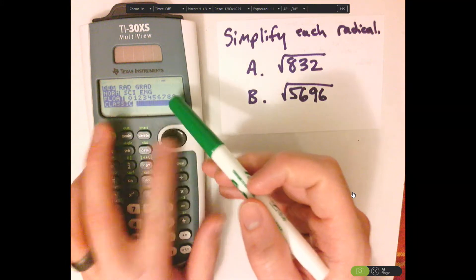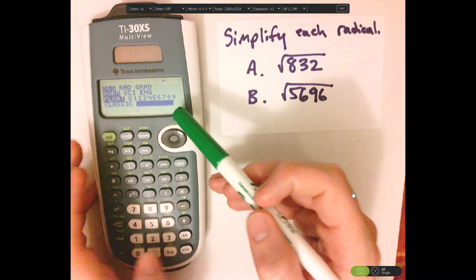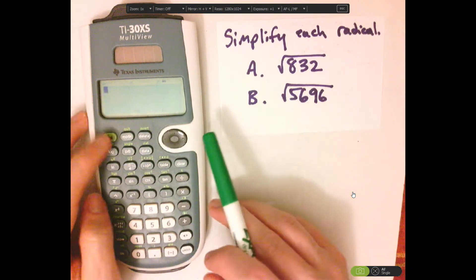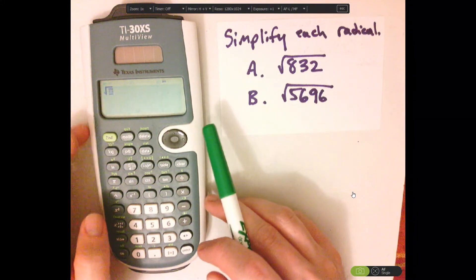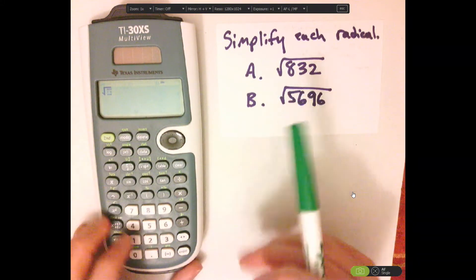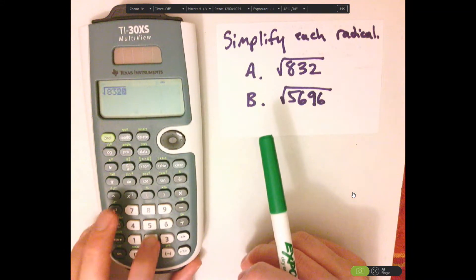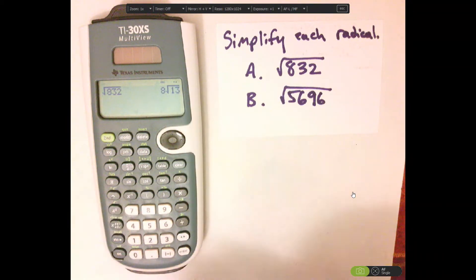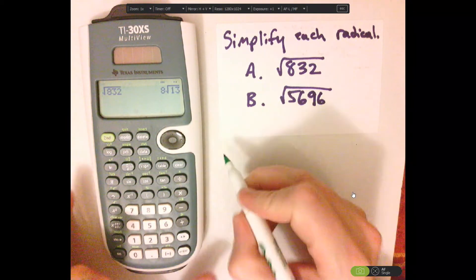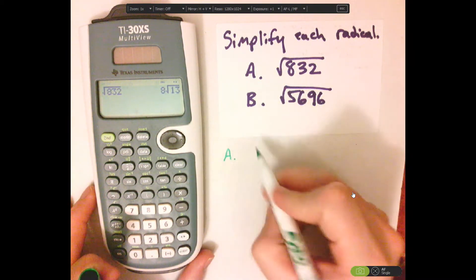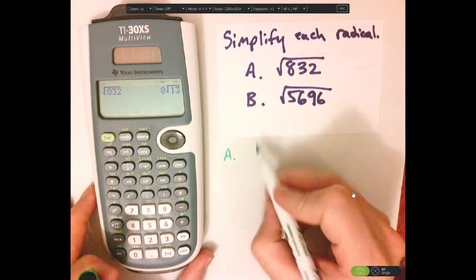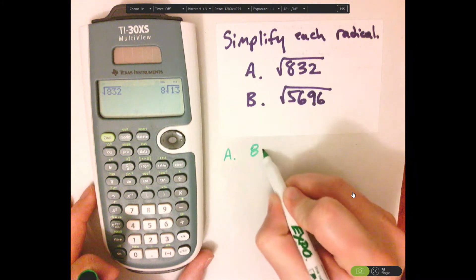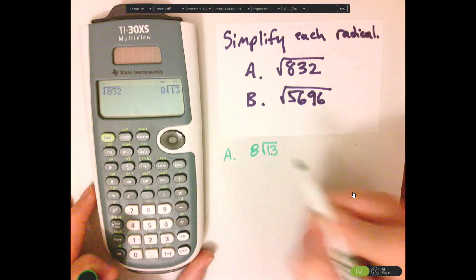Click over, push enter. Now it's in math print. Let me put 832 in there and see what happens. And it simplified it — that would be 8 square root of 13.